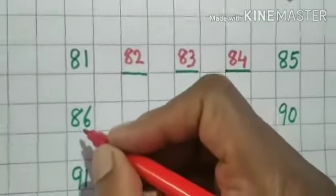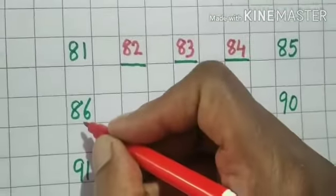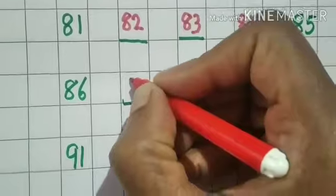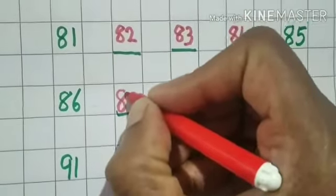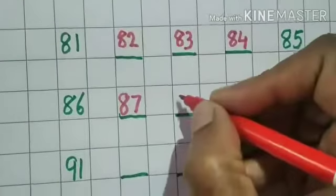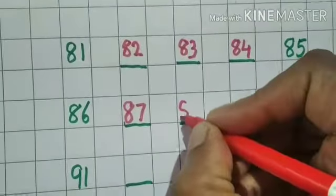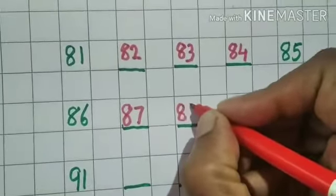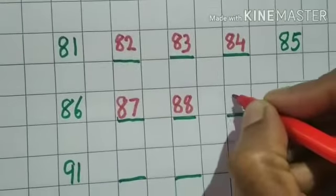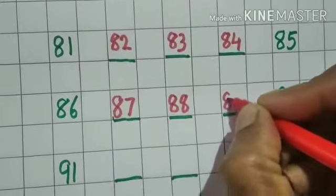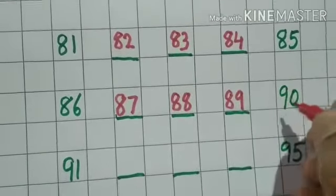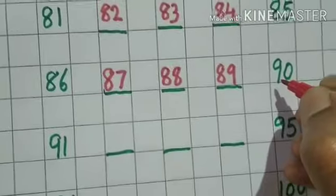The next — after 86, what will come, children? 87, 88, 89, and then comes 90.